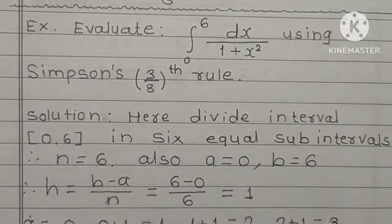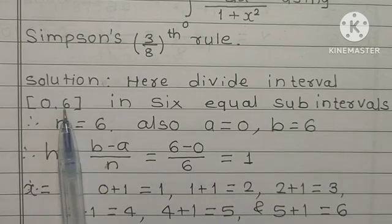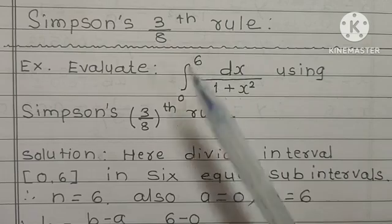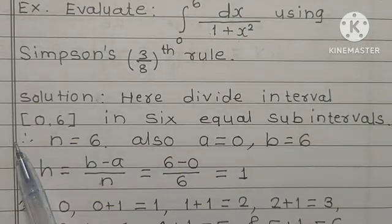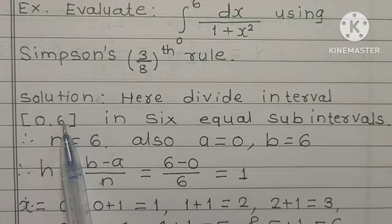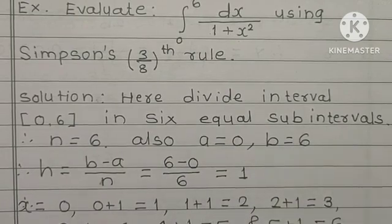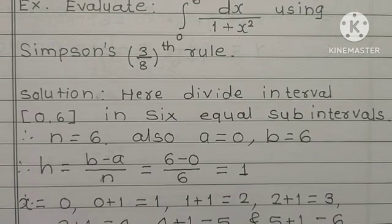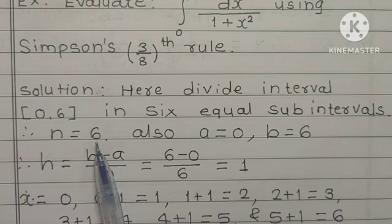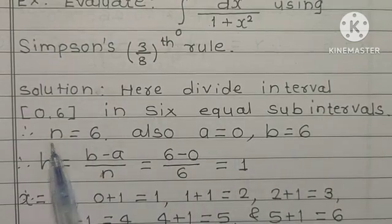Solution: here divide interval 0 to 6. This interval 0 to 6 is a closed interval, therefore write in rectangular brackets. That means 0 and 6 both are included in this interval. In 6 equal sub-intervals. So students, here we have given N is equal to 6.